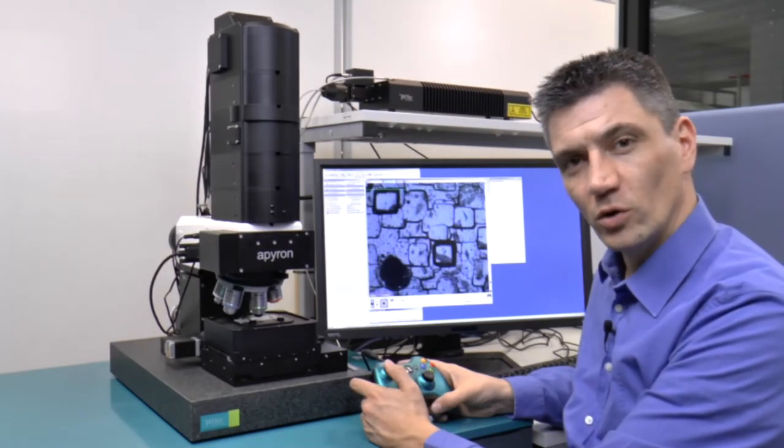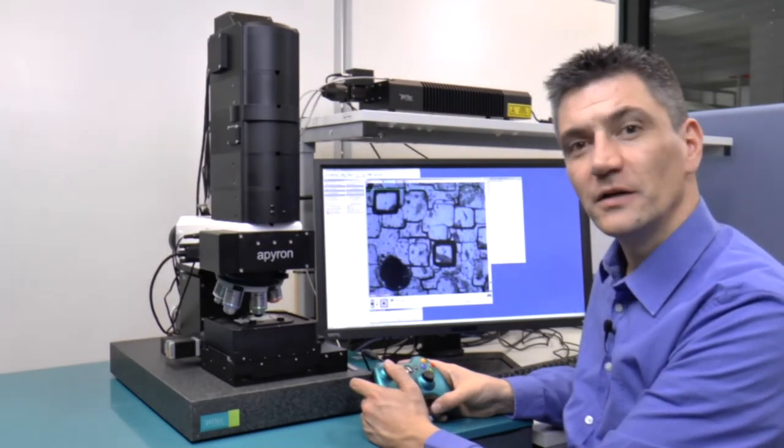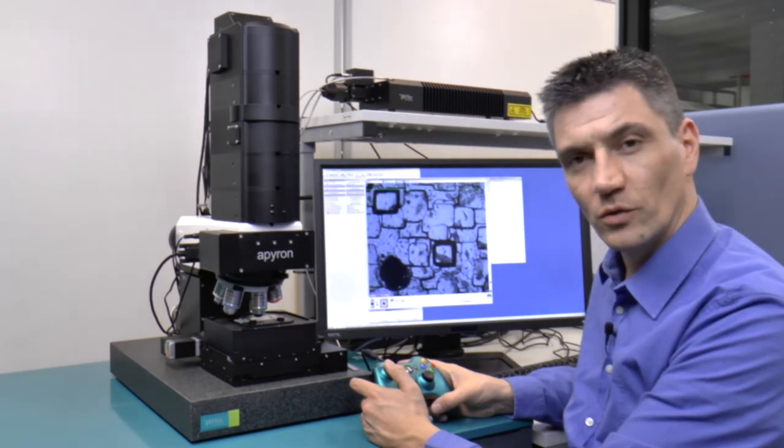The EasyLink control also allows you to control the motorized turret. Like this, you can choose which objective to use for your measurements.